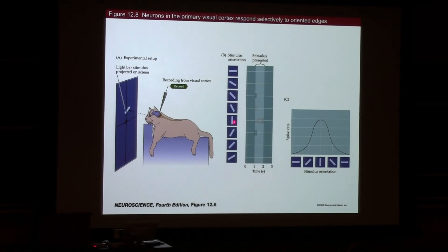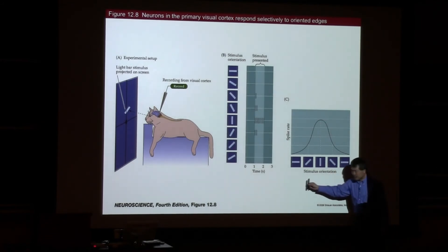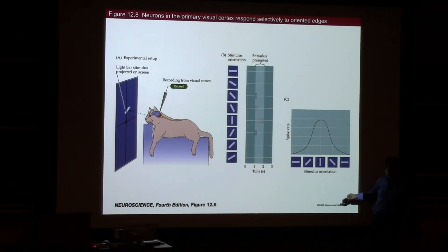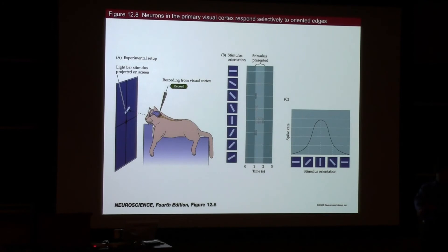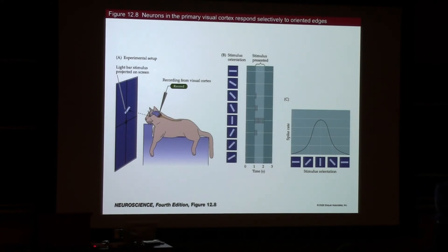That is the receptive field — it means this neuron is most responsive to a bar moving with a particular orientation. The point is that receptive field is not just about the area of skin or frequency — in the visual system it could be orientation, and in other systems it could be something else. The receptive field is defined by the physical parameters in the physical domain that describe how a neuron responds. It varies between systems.